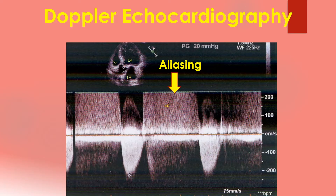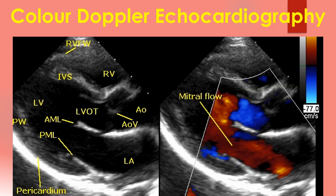An intermediate option is HPRF or high pulse repetition frequency Doppler. The disadvantage of continuous wave Doppler is that it cannot pinpoint the exact location of the high velocity signal, as it is continuously transmitting and receiving echo signals.